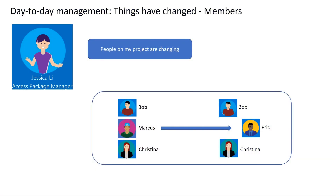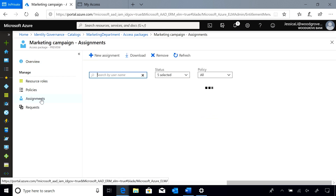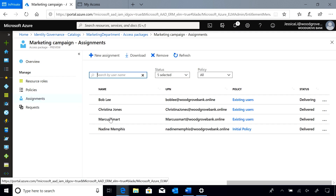What do I do if the people on my project are changing? I know that Marcus will not be working on this project after today, and I know that Eric, his replacement, will need to get started on it right away. With project members changing, Entitlement Management offers an easy way for the access package manager to make these member updates. Let's start with making sure that Marcus doesn't have access after today — I'm going to go to the assignments tab and remove Marcus.